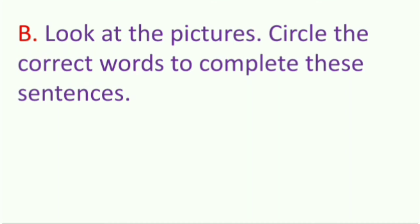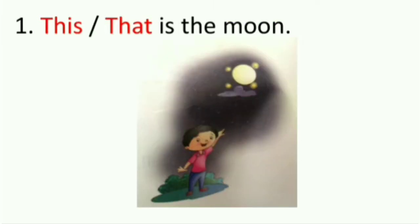Exercise B: Look at the pictures and circle the correct word to complete the sentences. You have to choose and circle the correct word. The first one: (this / that) is the moon. Children, can you see one boy pointing at the moon — the moon is far away — so for the thing that is far away we use the word 'that.' We will circle the word 'that'.